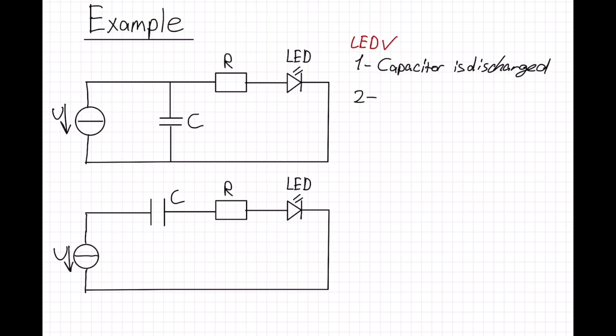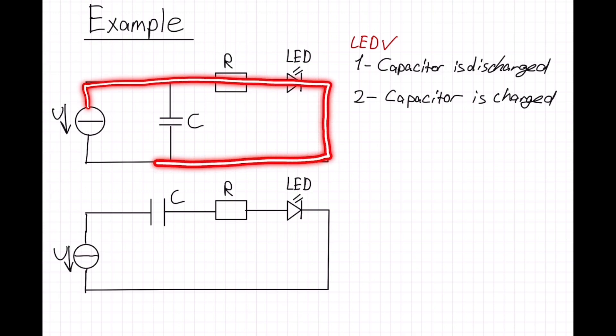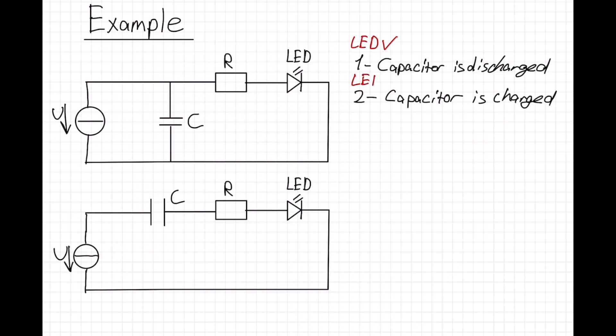Then in our second stage, our capacitor is fully charged. That means our capacitor doesn't need current and all the current goes through LED. So our LED turns on.